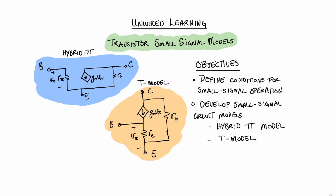Welcome to Unwired Learning. In this video, we're going to talk about the transistor small signal models. Our goals are to define the conditions for small signal operation in a transistor amplifier, and to develop the small signal circuit models known as the hybrid pi model and the T model. Over here on the left, you can see pictures of the hybrid pi model and the T model for the BJT circuits.